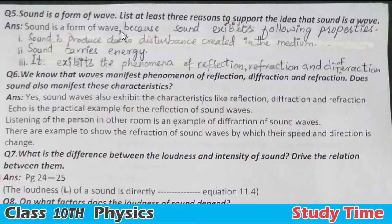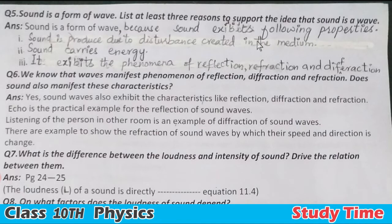Question number five: Sound is a form of wave because it exhibits the following properties. Sound is produced due to a disturbance created in a medium. The vibration and disturbance produces the wave form. Sound carries energy, and it exhibits the phenomena of reflection and diffraction.